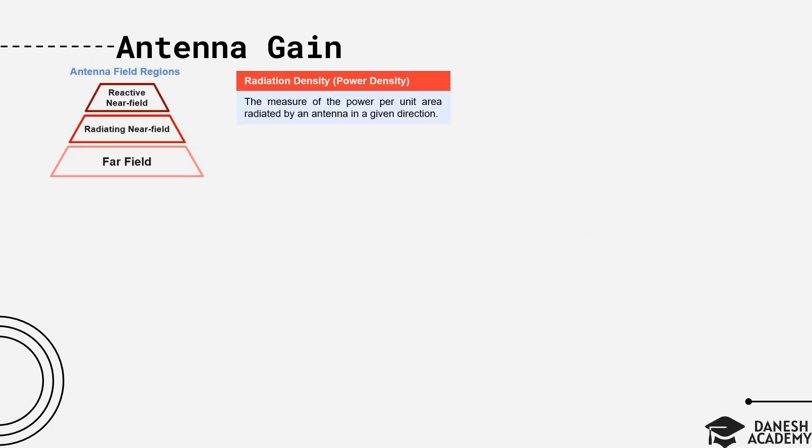Now, we need to introduce radiation density or power density for an antenna, which is simply the measure of the power per unit area radiated by an antenna in a given direction. We show it by W, and it is measured in watts per square meter.